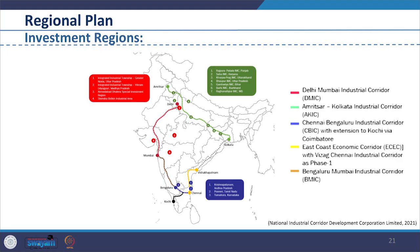Regions identified for development include Delhi-Mumbai Industrial Corridor, also known as DMIC; Amritsar Kolkata Industrial Corridor known as AKIC; Chennai-Bengaluru Industrial Corridor known as CBIC; East Coast Economic Corridor, ECEC; and Bangalore-Mumbai Industrial Corridor, BMIC.